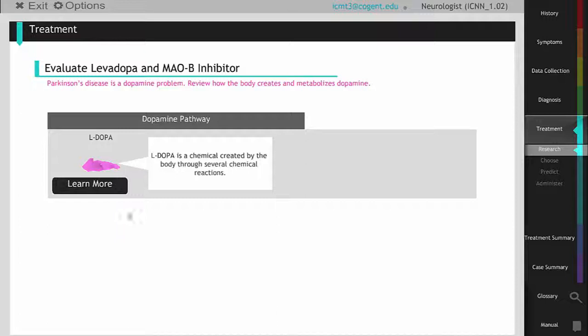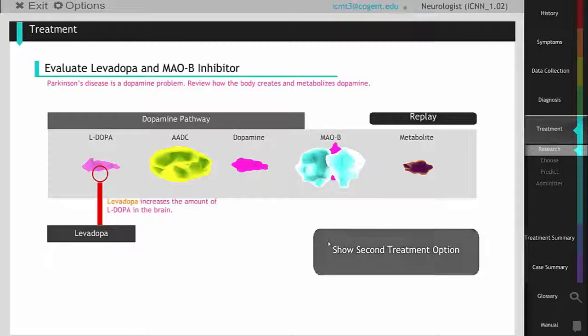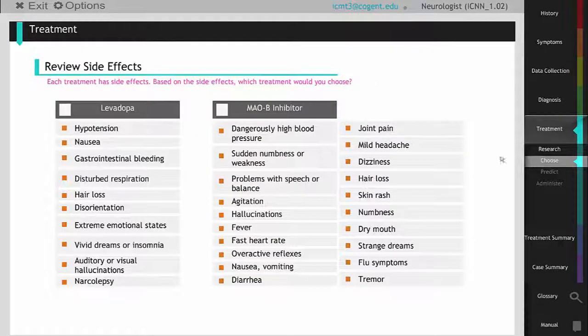Students then learn how to treat Dennis' symptoms. One treatment increases the activity of an enzyme that produces dopamine. Another treatment decreases the activity of an enzyme that breaks dopamine down. Both options serve to increase Dennis' dopamine signaling, but one has worse side effects than the other.